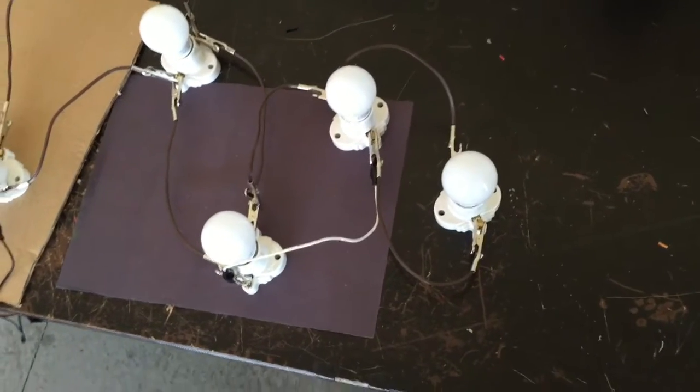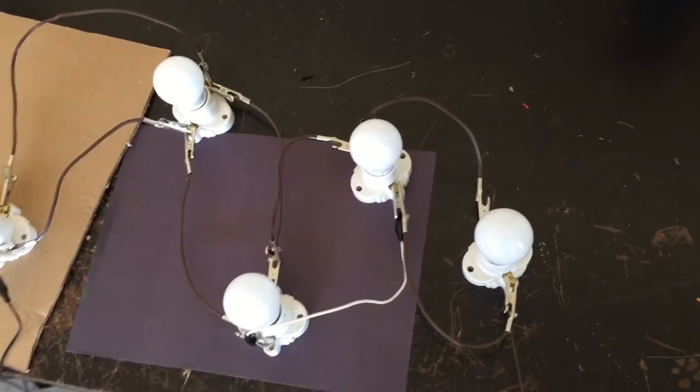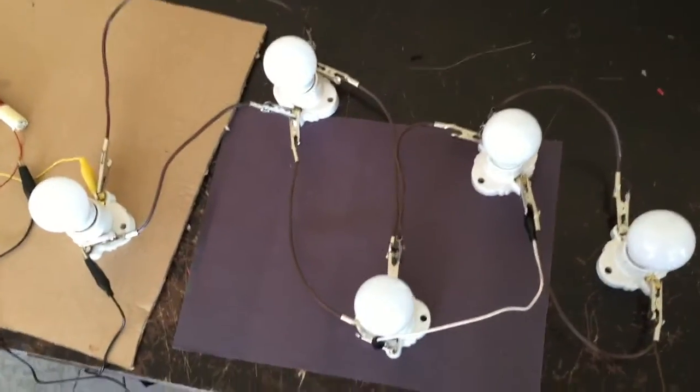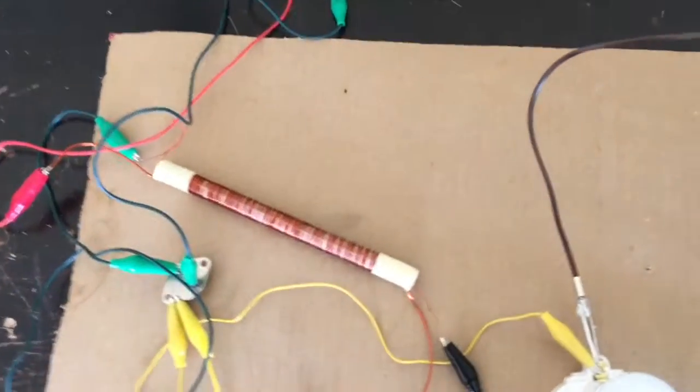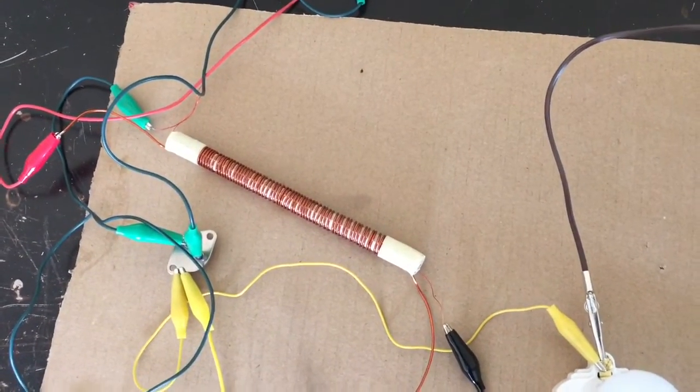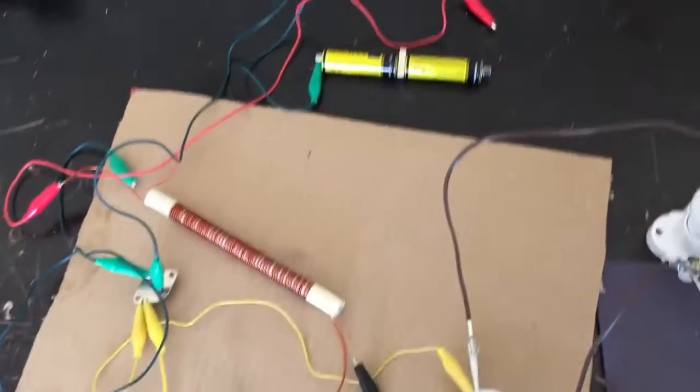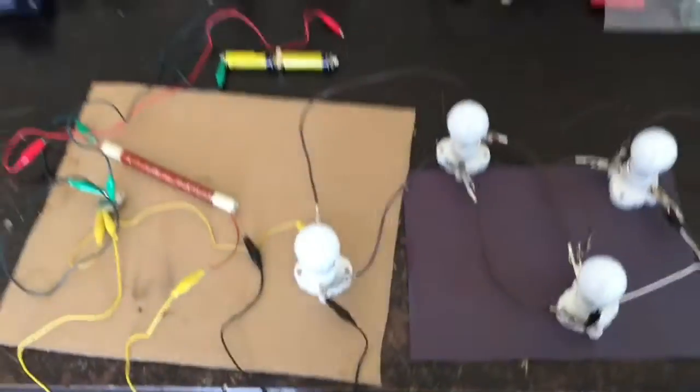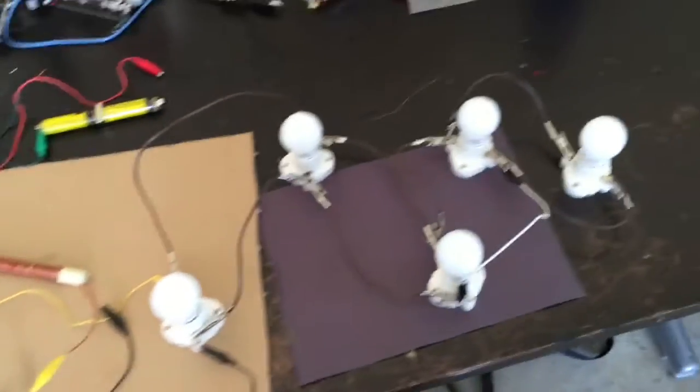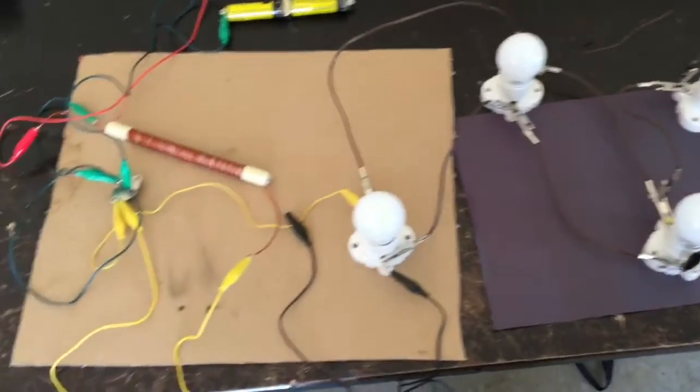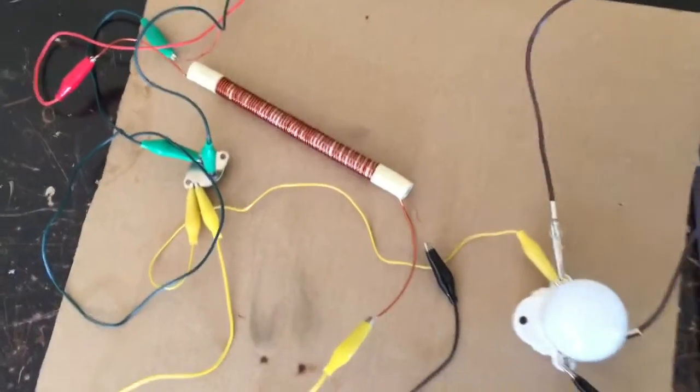Over here I've got five 120 volt LED lamps connected together in parallel and connected to the super joule ringer circuit and the 2N3055 transistor, and I've got a couple of small batteries there. So I'm going to test this out to see if we can run all those lights at the same time with this setup.